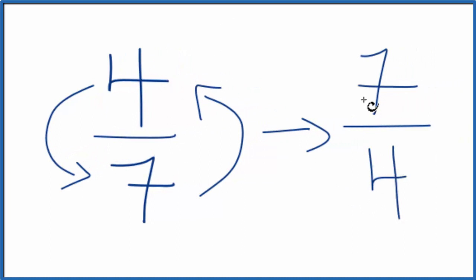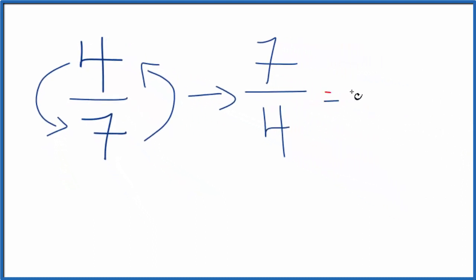So the reciprocal for four sevenths is seven over four. This is an improper fraction, so let's change it to a mixed fraction as well. Four goes into seven one time with three left over. So seven fourths is equivalent to one and three fourths. That means both of these are going to be reciprocals for four sevenths.